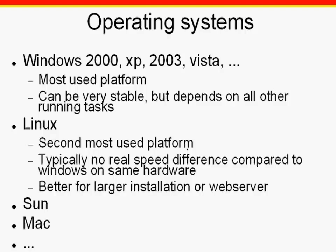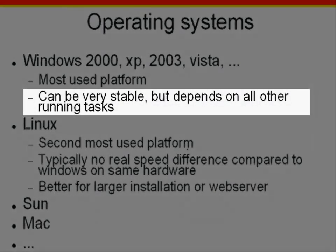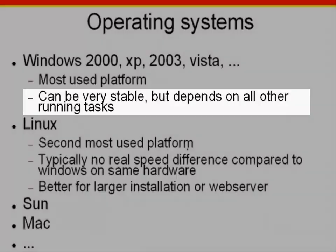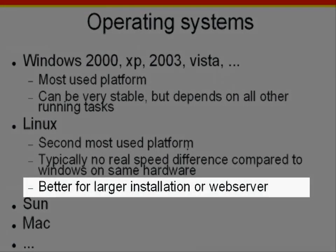The real advantage with Linux is quite simply the stability of the total system. With Windows, it is possible to achieve a high level of stability. There are, however, a number of parameters and settings that need to be configured accordingly. Linux is certainly better with regard to memory configuration, and the larger the application, the more advantages you will discover with Linux. And if you wish to run a web server alongside your Firebird server on the same machine, you should definitely consider using Linux.